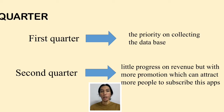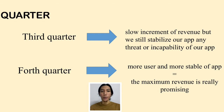For the second quarter, this phase will start to make a little progress on revenue, but with more promotions, we can attract more people to subscribe to our app. Promotions include premium memberships and customer reviews on our service so we can improve our application. For the third quarter, this phase also has a slow increment of revenue, but we still stabilize our application because this phase is where our customer base starts to increase and we address any threats or issues with the app and do maintenance.